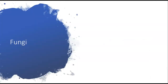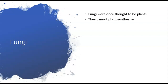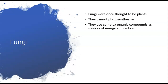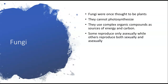Fungi were once thought to be plants — it makes sense, right? They grow out of the ground, they kind of look like plants, they look vegetative. But they cannot photosynthesize. They do not have the green pigment chlorophyll in order to do photosynthesis. They use complex organic compounds as sources of energy and carbon. Some reproduce only asexually, while others reproduce both sexually and asexually. Most fungi produce spores that are disseminated by the wind.